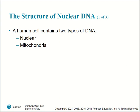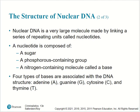A human cell contains two types of deoxyribonucleic acid: nuclear DNA, found in the nucleus of cells, and mitochondrial DNA, found in the mitochondria outside the nucleus of a cell. Nuclear DNA is a very large molecule made by linking a series of repeating units called nucleotides. A nucleotide is composed of a sugar, a phosphorus-containing group, and a nitrogen-containing molecule called a nitrogenous base. Four types of bases are associated with DNA.